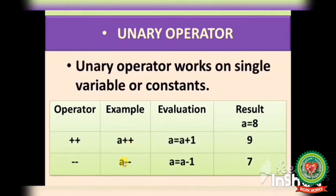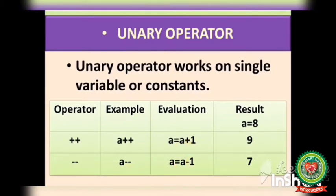A plus plus is an example of a unary increment operator, and A minus minus is an example of a unary decrement operator. By evaluation: if the value of A is equal to eight, we write A = A + 1. Unary operator always increases or decreases the value by one. So A = A + 1 means the value of A increases to nine, and A = A - 1 means eight minus one gives seven. These are the increment and decrement operators of the unary type.